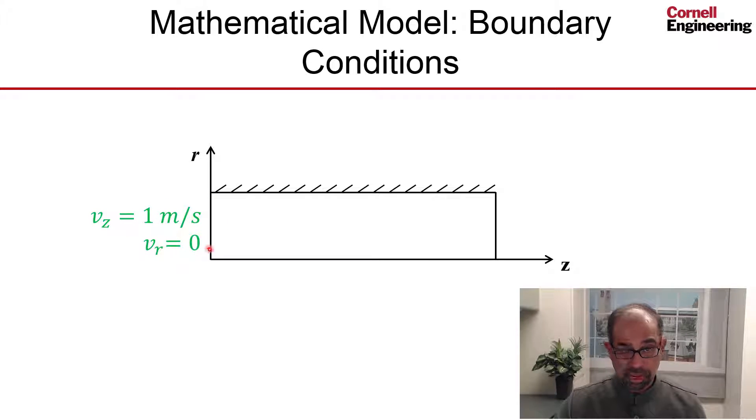This is the boundary where we have the flow coming in with uniform velocity, so the axial component of the velocity we'll set to one meter per second, and the radial component to be zero.